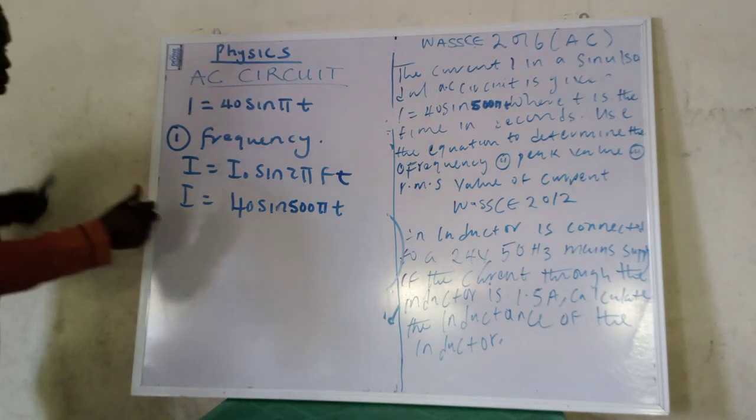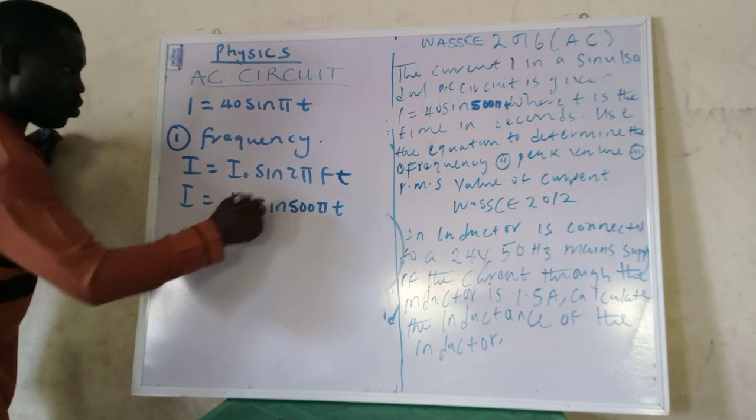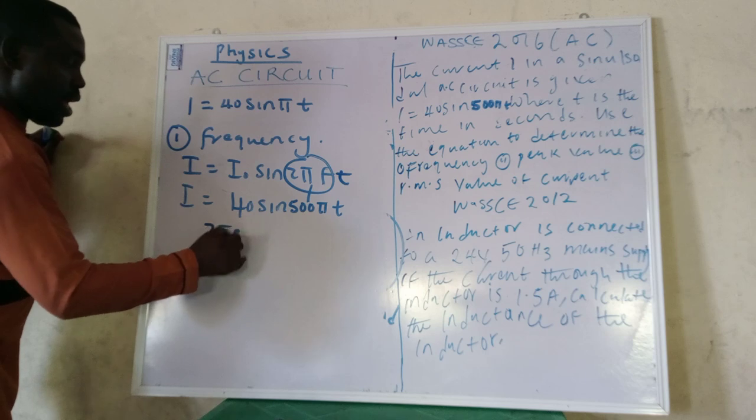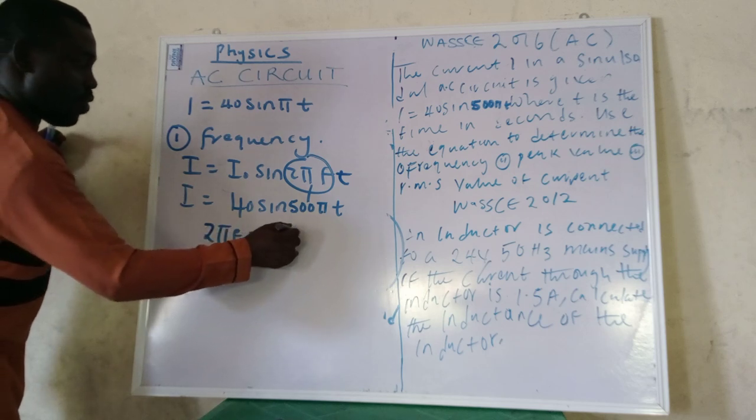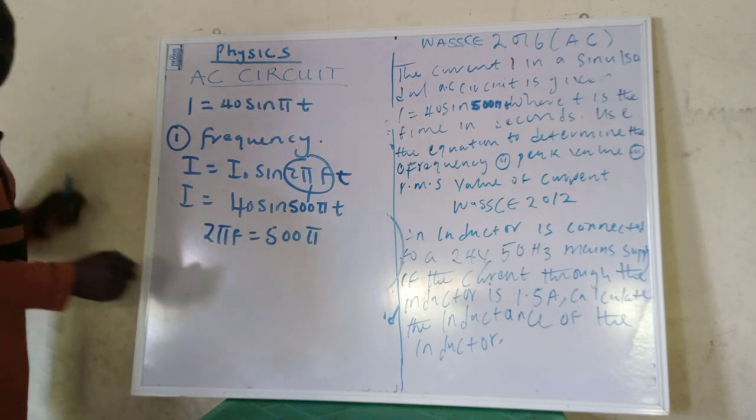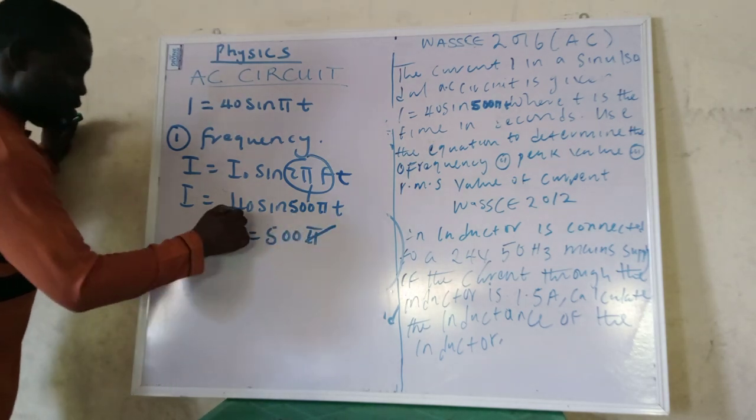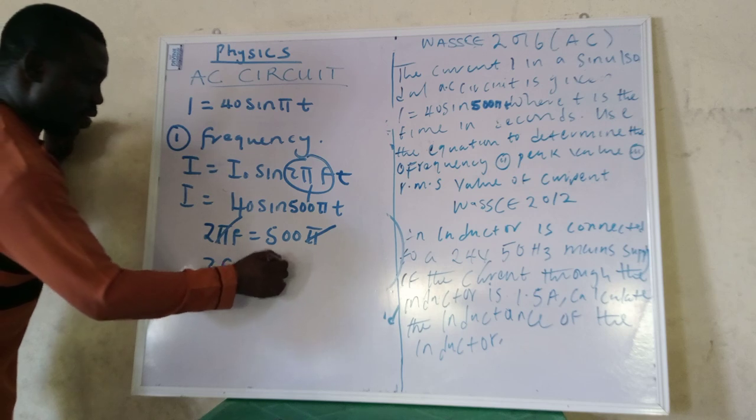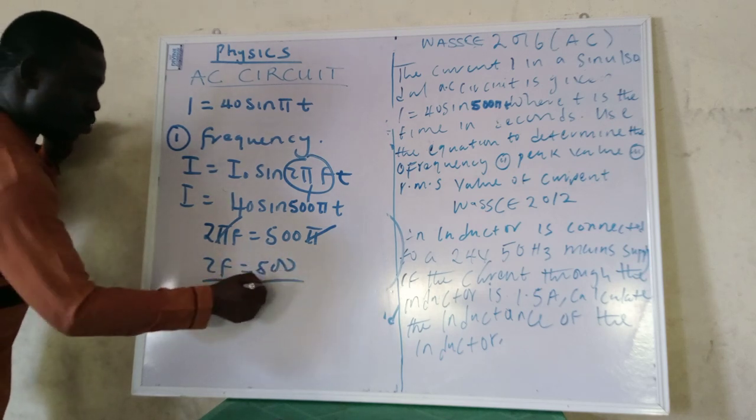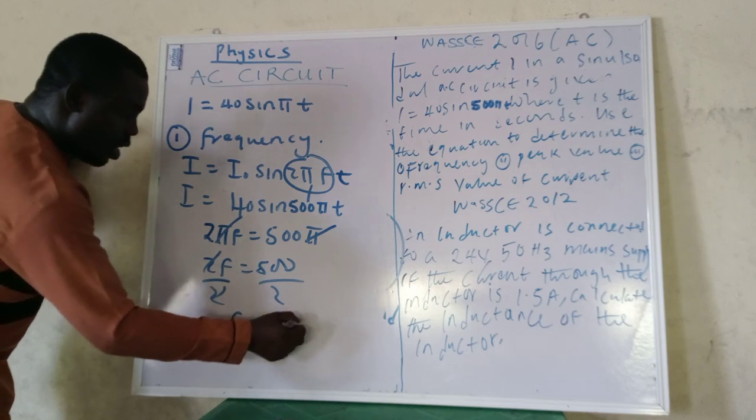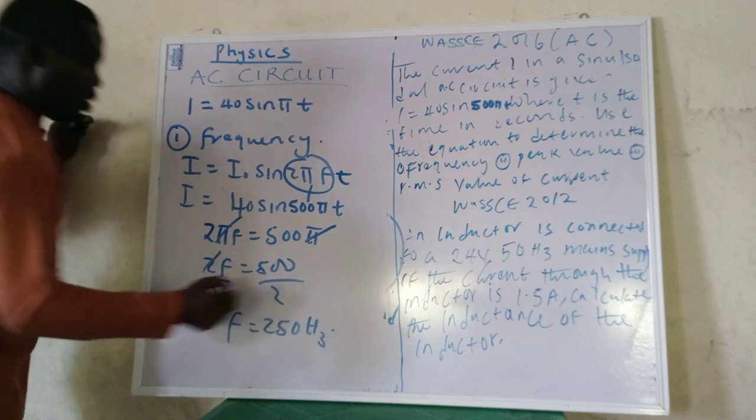Okay, thank you. So making comparison, we are going to have, look at this and this, so 2πf equals 500π. I'm sure that's clear. Okay, so π cancels π, 2f equals 500. Divide both sides by 2, f is 250 Hertz, which is a unit of frequency.